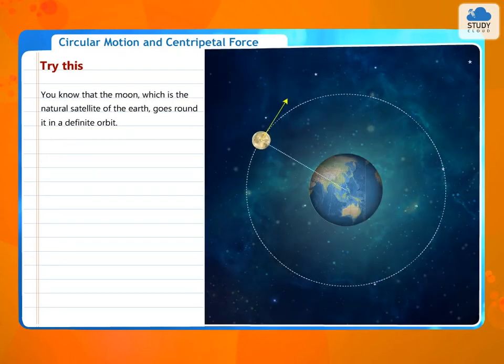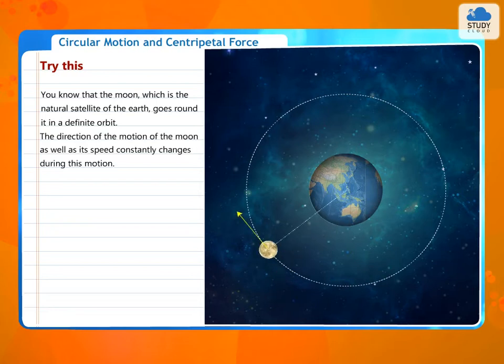You know that the moon, which is the natural satellite of the earth, goes round it in a definite orbit. The direction of the motion of the moon as well as its speed constantly changes during this motion.